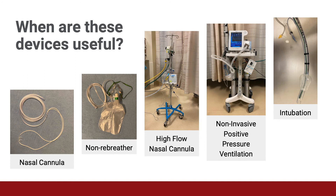Respiratory support can be thought of in a tiered approach that escalates as a patient's needs change. In general, we progress from room air to nasal cannula to non-rebreather to high flow nasal cannula or non-invasive positive pressure ventilation, and ultimately to intubation. We're going to want to frequently check on how our patients are doing and see if they need more support.